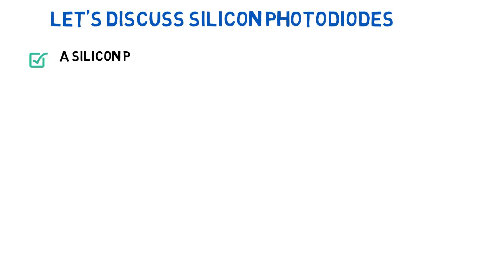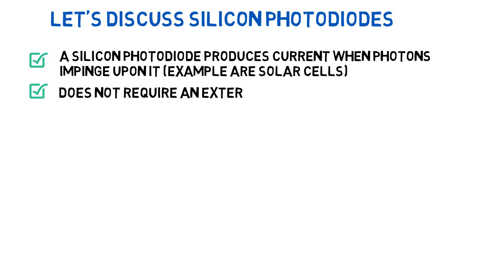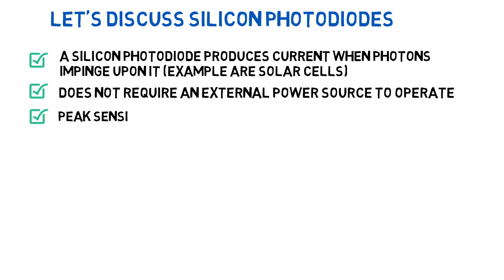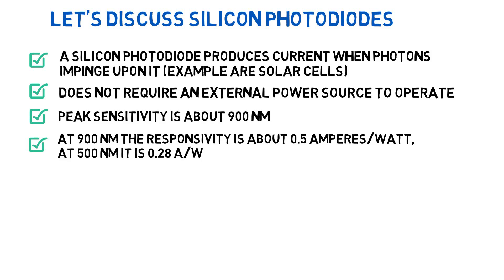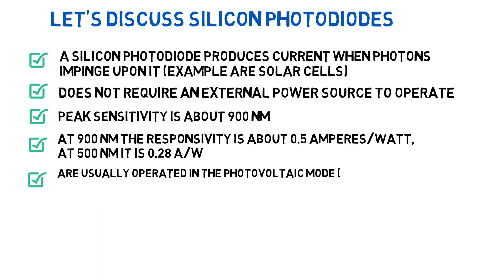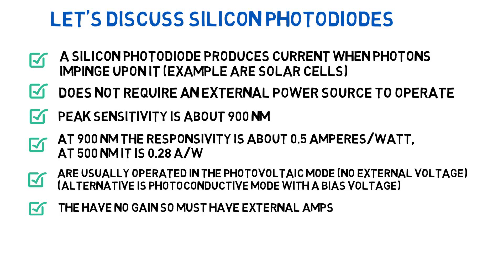Let's discuss silicon photodiodes. A silicon photodiode produces current when photons impinge upon it — an example being a solar cell. They don't require an external power source to operate, and their peak sensitivity is around 900 nanometers. At 900 nanometers, the responsivity is about 0.5 amperes per watt, and at 500 nanometers, it's about 0.28 amperes per watt. They are usually operated in the photovoltaic mode, which means no external voltage. Alternatively, they can be operated in the photoconductive mode with a bias voltage, which is fairly common in flow cytometry.